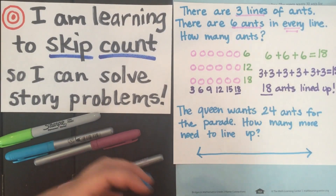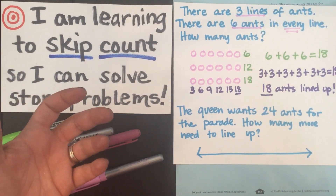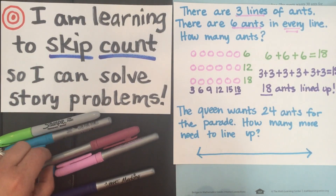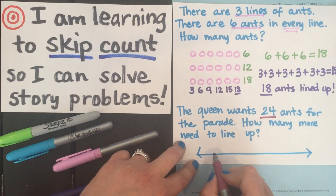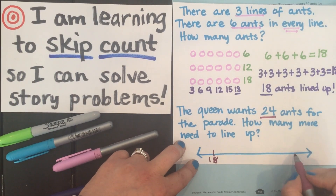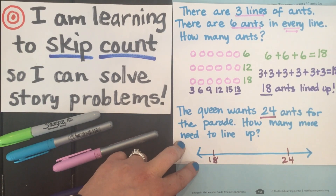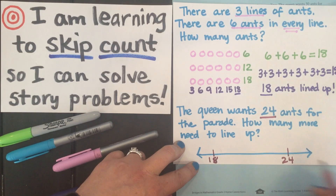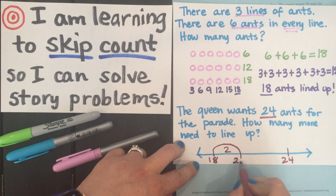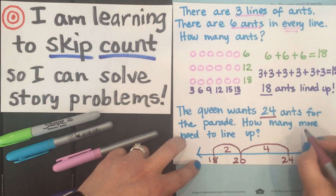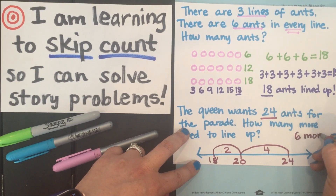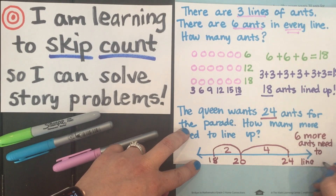The second part of the problem will ask you to do some work on the open number line, which is what we practiced on Monday. The queen wants 24 ants for the parade, but remember she only has 18. So here we are at 18. If two more ants come to the parade, that gets me to 20, and then I would need four more ants to go from 20 to 24. So in my jumps on the open number line, I can see that she would need six more ants to line up.